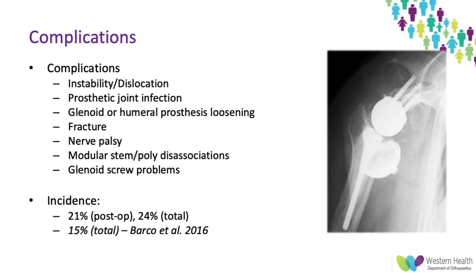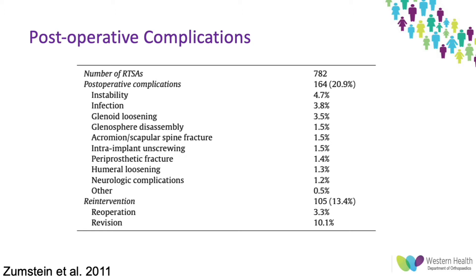Another systematic review from 2016 showed approximately 15% total complications after reverse shoulder arthroplasty. All of the intraoperative complications in the first systematic review were fractures, of which there were 16 humeral fractures, 7 glenoid fractures, and 1 acromion fracture from a transacromion approach. This data comes from 782 reverse total shoulders with an average follow-up of 42 months.